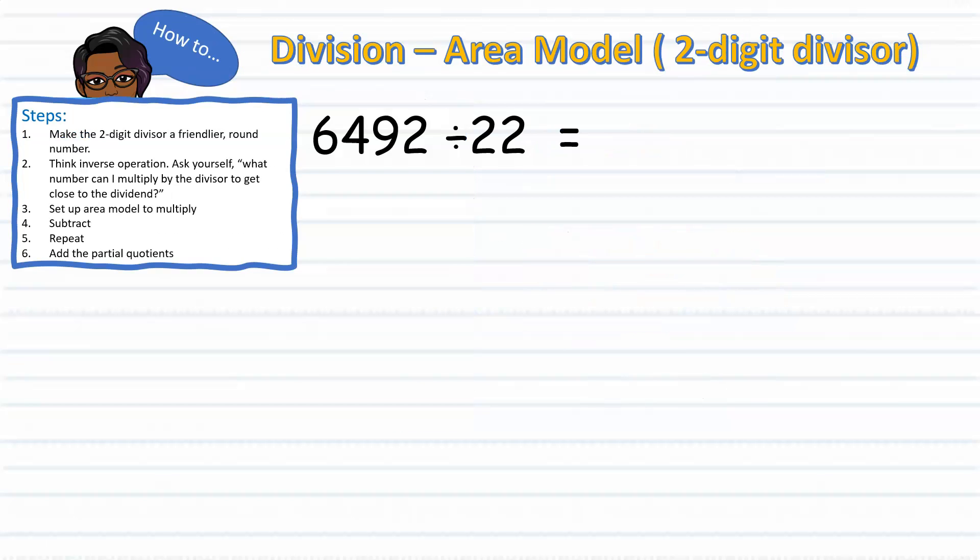This time, we will divide a four-digit number by a two-digit divisor, 6,492 divided by 22. Step one, we want to think in terms of a friendlier round number. So we're going to take that 22 and we're going to round it to 20. And think to ourselves,